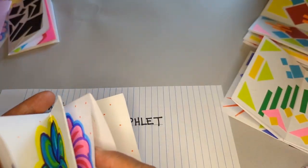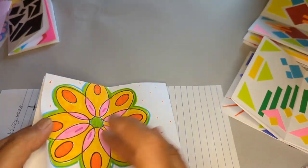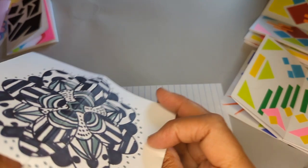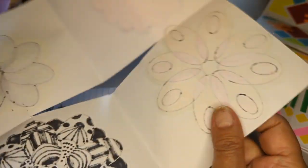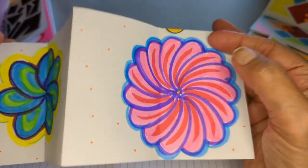The same thing goes for markers. You can use markers to your heart's content on these and if the markers bleed through the paper, well it doesn't really matter because double pages.